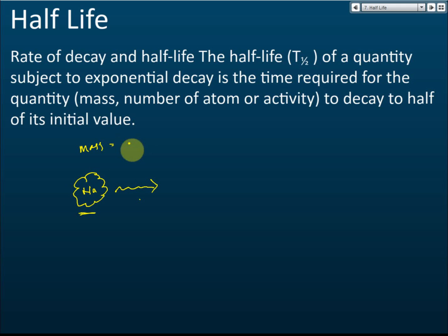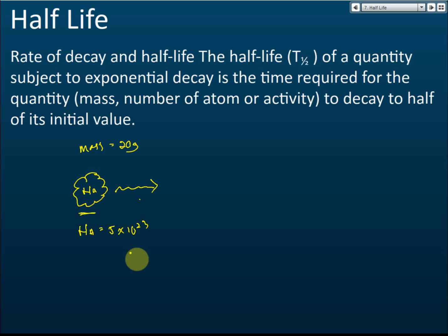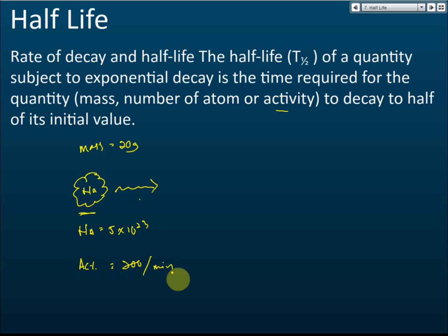Initially, let's say the sodium mass is 20 grams. Or we can measure the number of atoms — let's say it is 5 times 10 to the power of 23. Or we can measure the activity, which means how many emissions occur per minute. Let's say it emits 200 emissions per minute. So there are a few ways to measure the quantities of this radioactive substance.